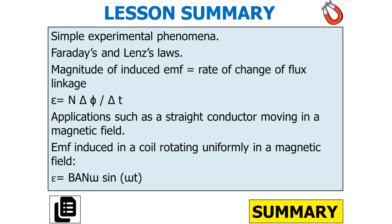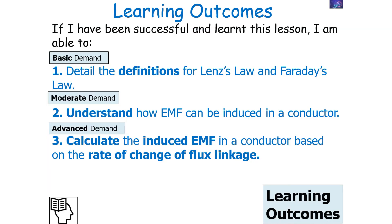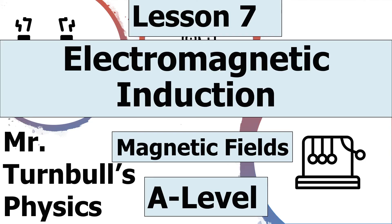In today's lesson we looked at Faraday's law, understanding that the magnitude of induced EMF equals the rate of change of flux linkage, where E = NΔΦ/Δt. We considered applications such as a straight conductor moving in a magnetic field and a coil rotating uniformly in a magnetic field. We can detail the definitions of Lenz's law and Faraday's law, understand how EMF can be induced in a conductor, and calculate the induced EMF based on the rate of change of flux linkage. Thank you very much for listening to today's lesson on electromagnetic induction, part of the magnetic fields topic in AQA A-level physics.